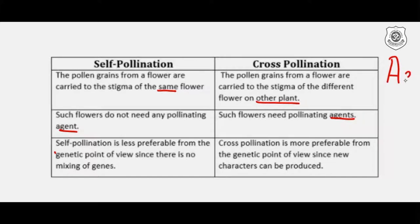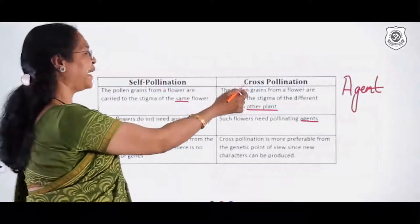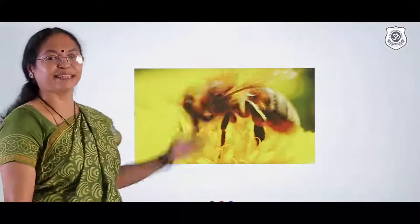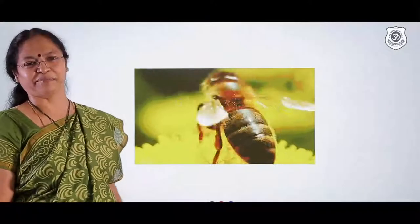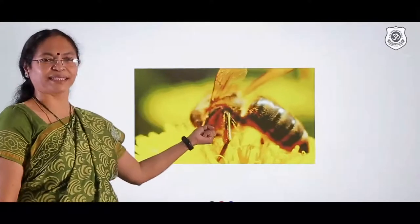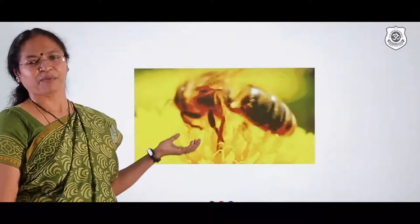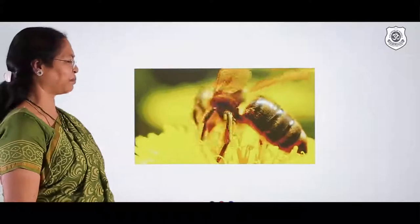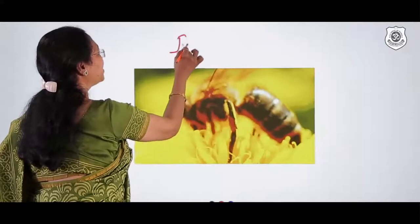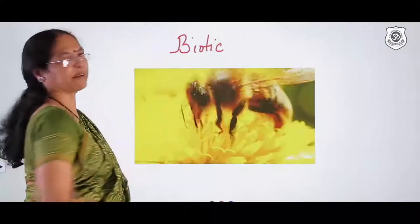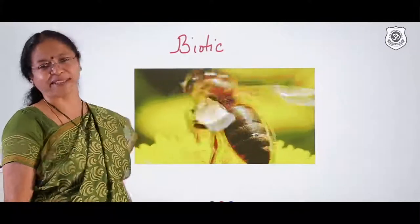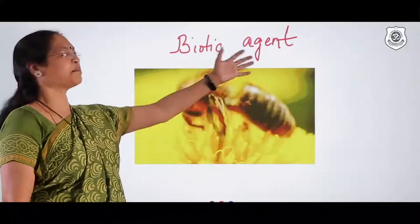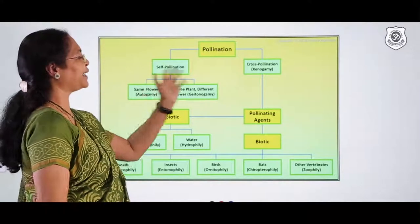The term 'agent' refers to what causes pollination. For example, an insect sitting on a flower and carrying pollen grains from one flower to another of the same type — that is a biotic agent. Biotic agents are living organisms. Abiotic agents are non-living — wind and water are the two non-living agents that can bring about pollination.